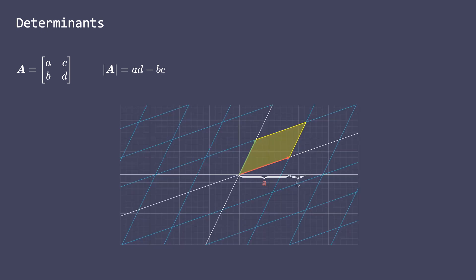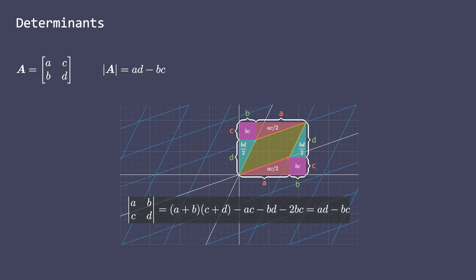The determinant of a 2D matrix can be obtained by cross multiplying the elements starting from the top left and then subtracting the products. You can pause the video here to see the geometric interpretation of this formula.